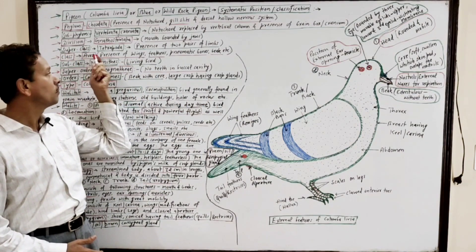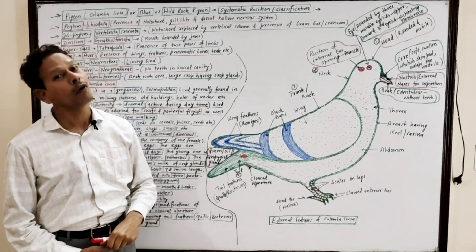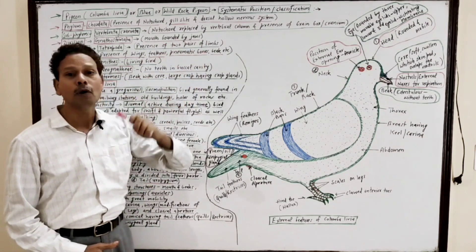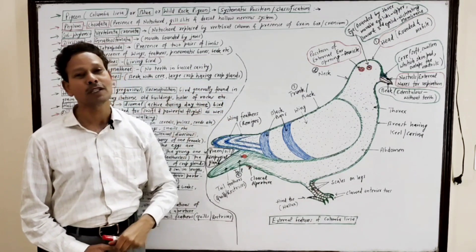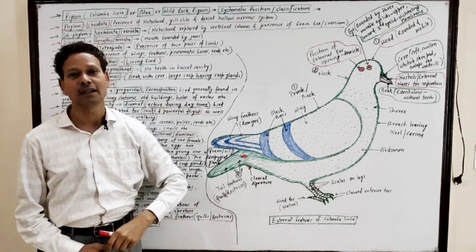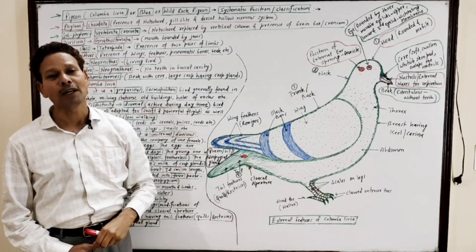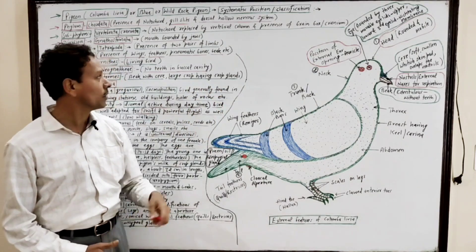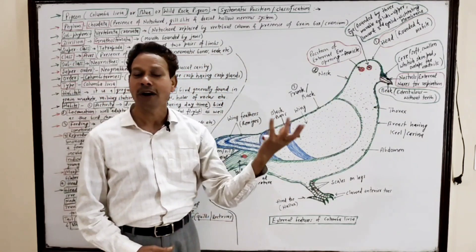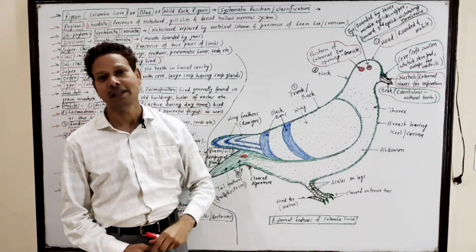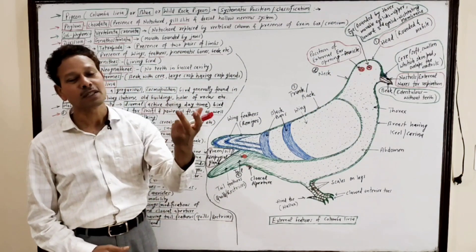Class Aves - presence of wings which are modified forelimbs, feathers, and pneumatic bones. Important question: pneumatic bones presence means the animal possesses hollow bones, cavities are there in bones, air cavities in order to reduce or minimize the body weight which helps in flight adaptation. Presence of beak means both jaws are modified into hard horny beaks. This character, presence of beak, again reduces body weight.